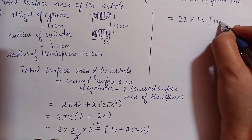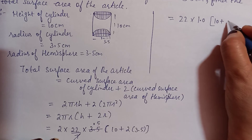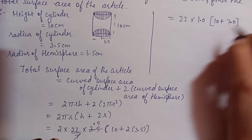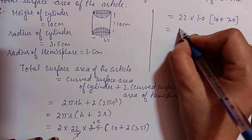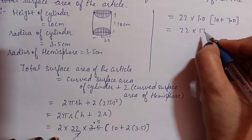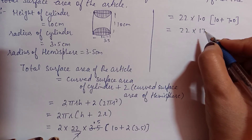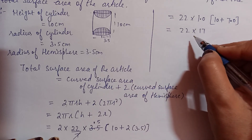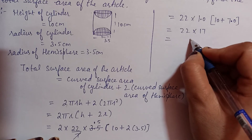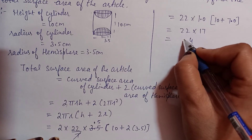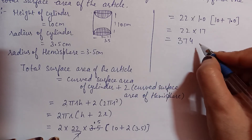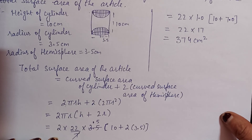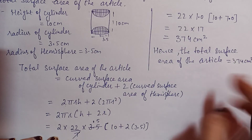After calculation: 22 × 17 = 374. So 17 twos are 34, 17 threes are 34+3 = 37... the answer comes to 374 centimeter square. Hence the total surface area of the article = 374 cm². Okay, thank you, see you, beta.